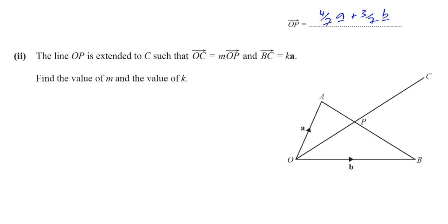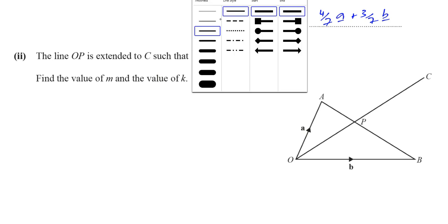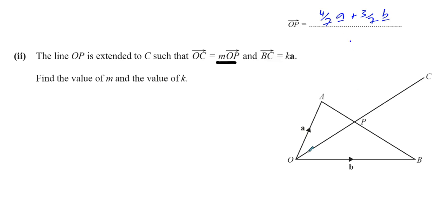Now, they told us that the line OP is extended to C. So the line from O to P is extended until it meets C. And they told us that O to C, the vector from O to C is some multiple of O to P. And we can see that quite clearly. It's along the same line and it's longer than O to P. So it's a multiple of O to P.